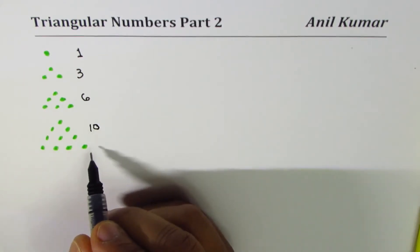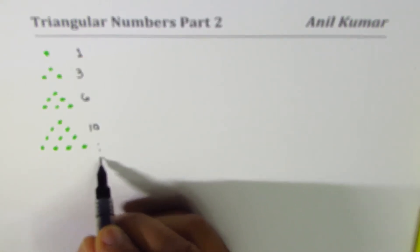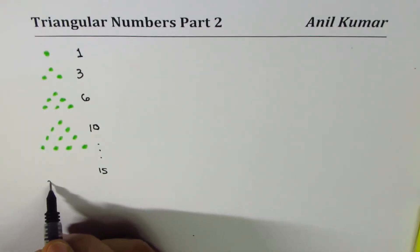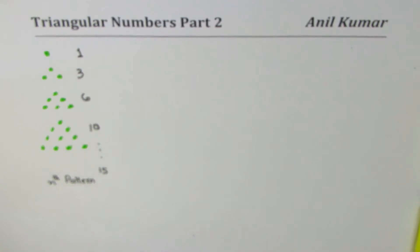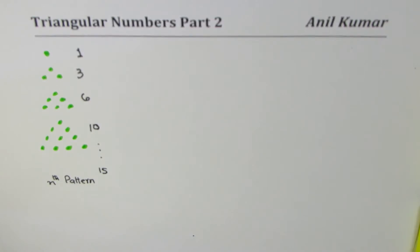In the fifth pattern, you expect 15. I'll not make the fifth pattern here. Now, can you tell me how many dots will be there on the nth pattern? We have to figure out a rule by which we can find how many dots will be there in the nth pattern.